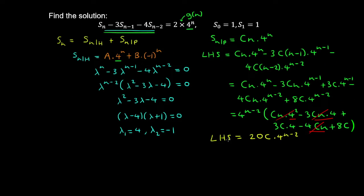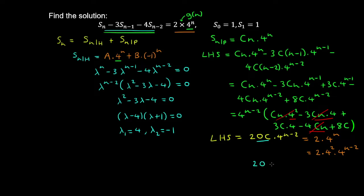We equate this left-hand side with the right-hand side of the recurrence relation, which is 2·4ⁿ. Since 2·4ⁿ equals 2·4²·4ⁿ⁻² = 32·4ⁿ⁻², we get 20c = 32, which implies c = 8/5. This is our particular solution.